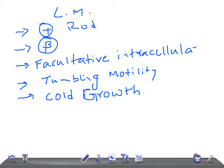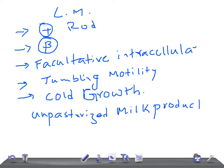The reservoir for Listeria is unpasteurized milk products, because it is present in the gastrointestinal and genital tracts of animals. In USMLE, look for mentions of goat's milk or camel's milk. Cold growth is also seen in soft cheese, hot dogs, and deli meats. Transmission is foodborne, vertical, or across the placenta.